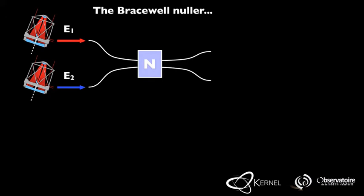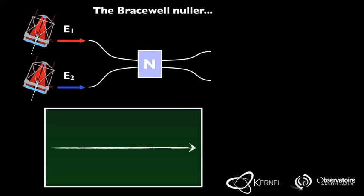To manufacture such a device, several technologies are available. One could use an old-school beam splitter, or go for a more modern X-junction in a single-mode photonic device. Whatever the technology, the nuller will produce two outputs.